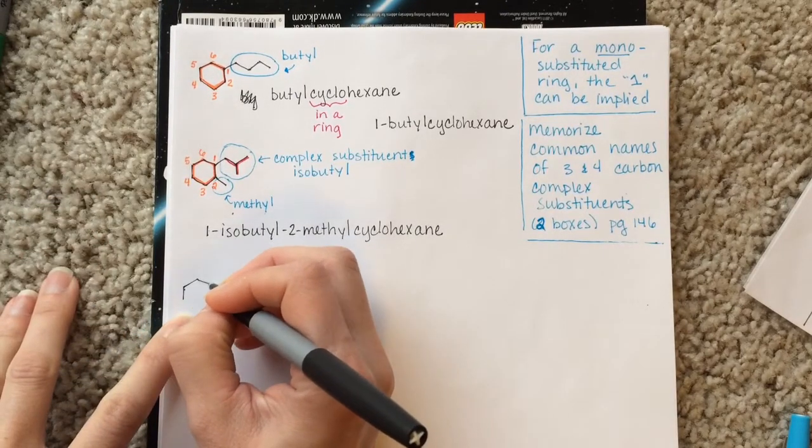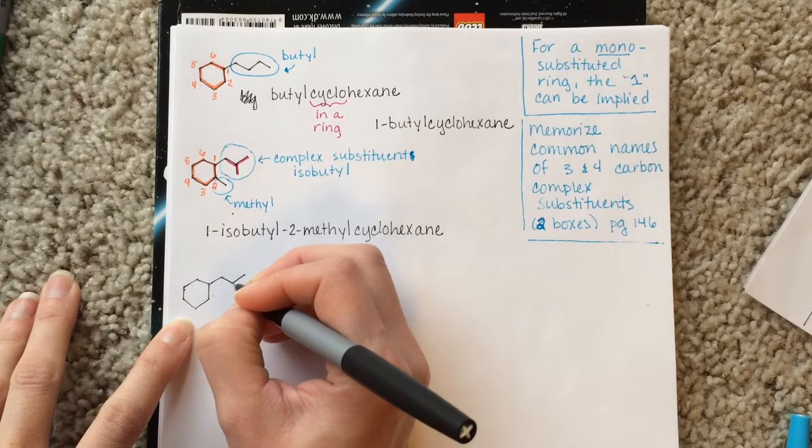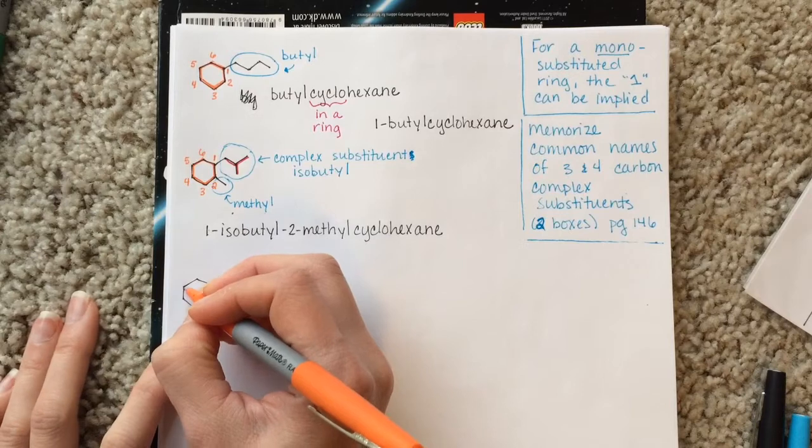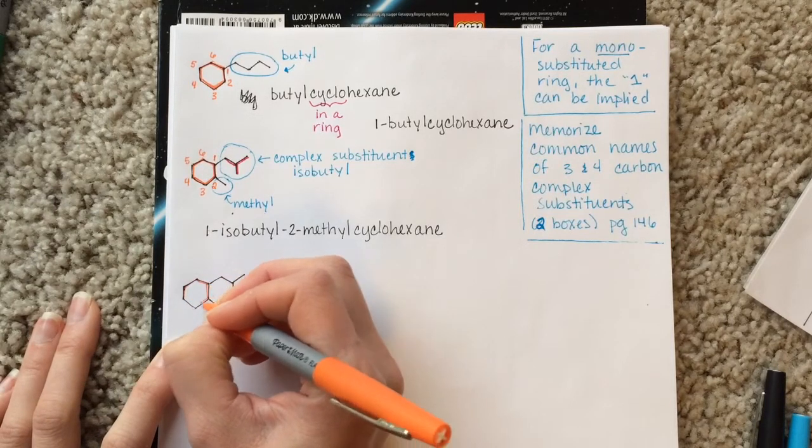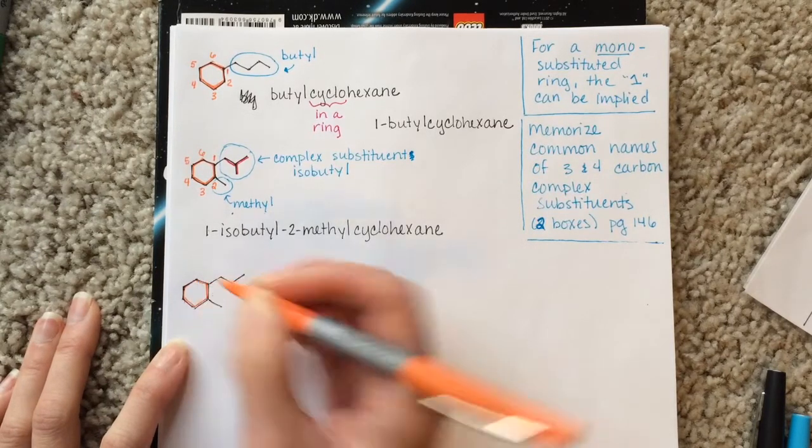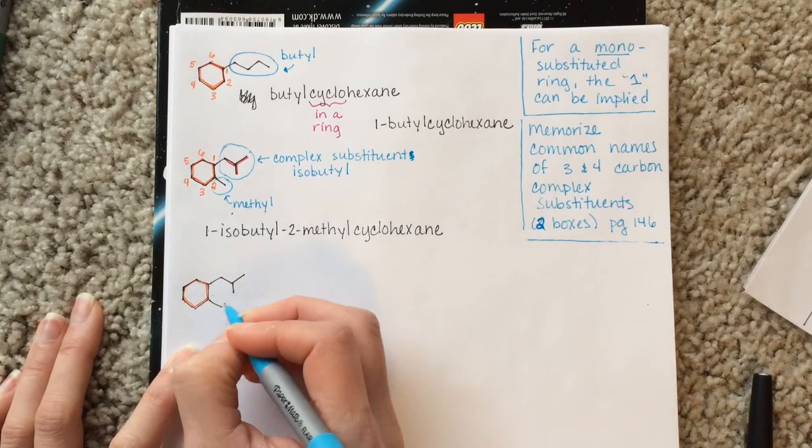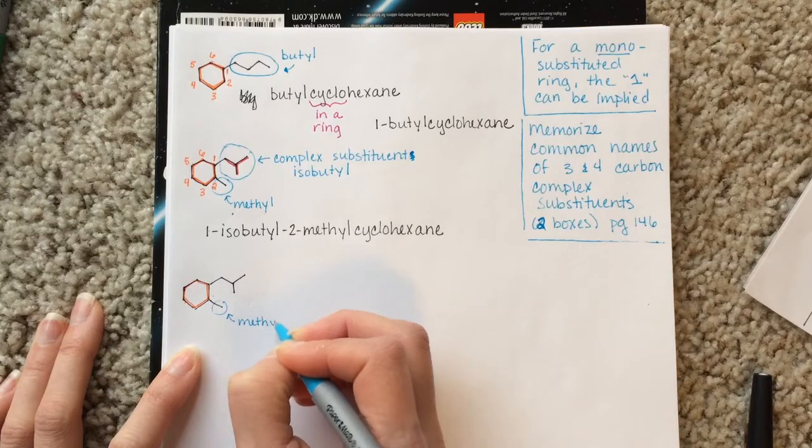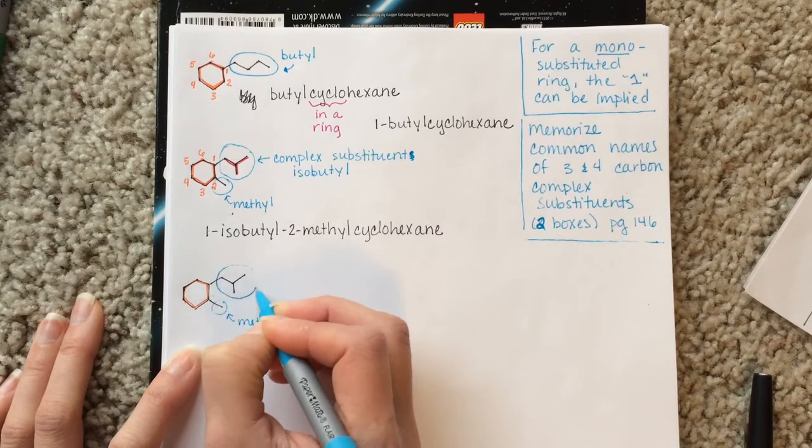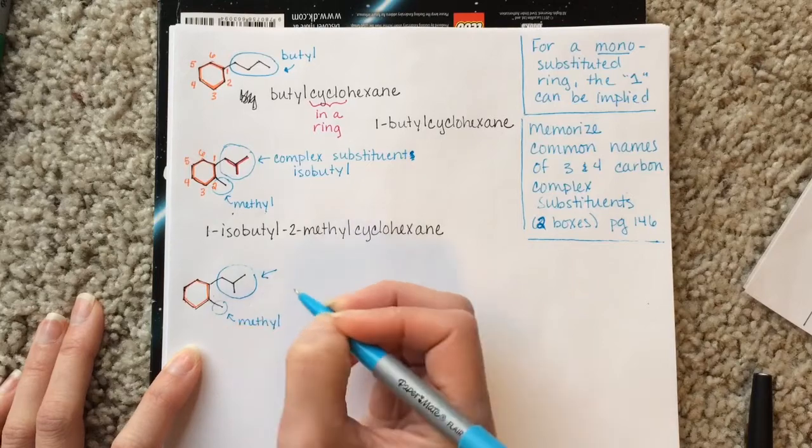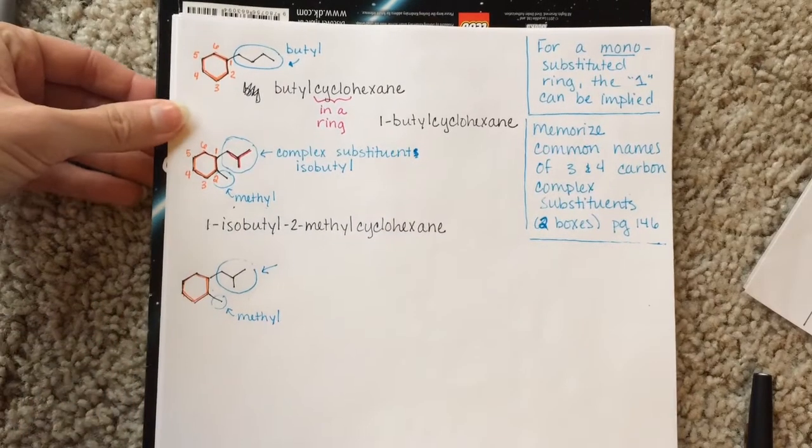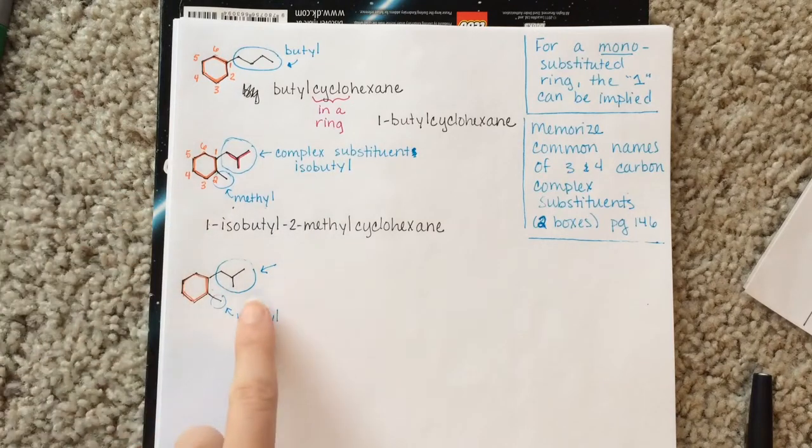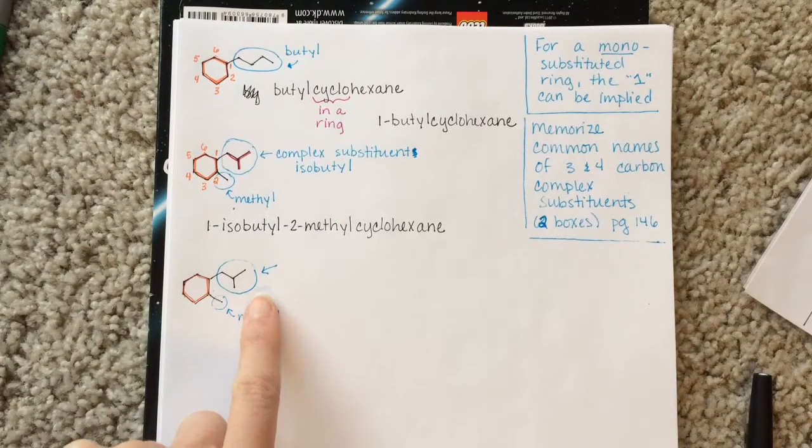First of all, we're going to revisit this molecule, the one that we just did. We've already identified this as a cyclohexane, a six-membered cyclic, as being the largest chain. And this guy down here is our methyl substituent. And then up here on top, our complex substituent. And I showed you a minute ago that it was commonly named, this guy is commonly named as the isobutyl substituent.